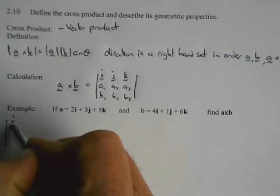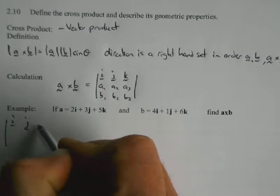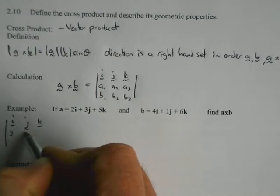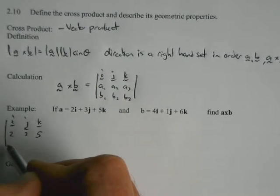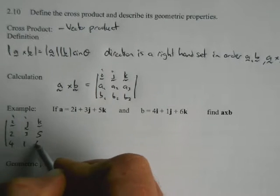it should be the determinant of I, J, K, A is 2, 3, 5, and B is 4, 1, 6.